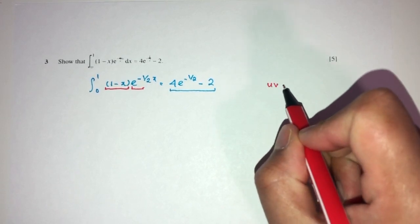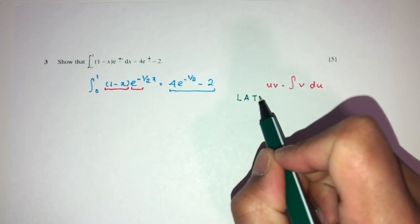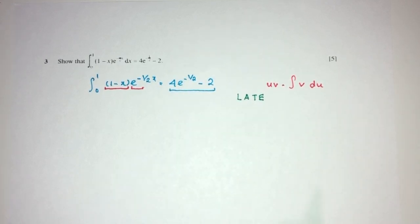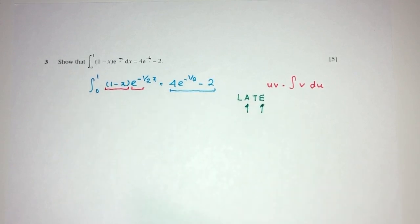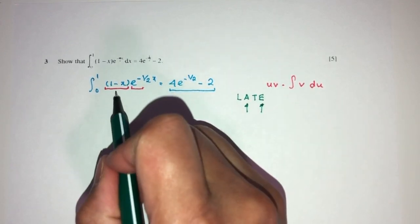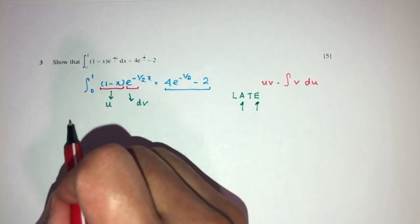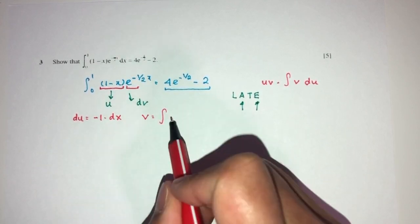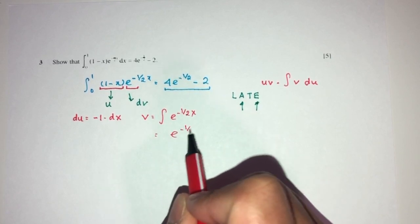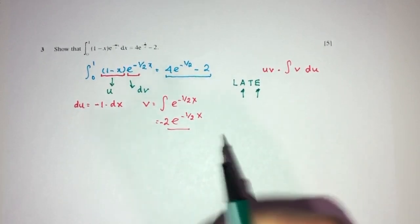The formula is uv - ∫v du. For by-parts, we have to use the rule of LATE or LIATE. Right now, we don't have inverse trig function. This is algebra. This one is exponential right here. So, in this list, which one comes first? This one comes first. So, my algebra here will be my u. This will be my dv. I have to find the value of du. du will be -1 dx. I have to find v by integration. That will be same stuff, but divide by -1/2. When you divide by half is times two. Minus will be adding the minus sign in front. That will be your v.